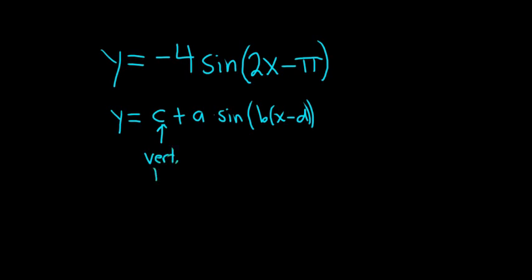For example, c here is the vertical translation. And the absolute value of a, that's called the amplitude. And the period is equal to 2π over b. So the period here is 2π over b. And then the phase shift, that's little d.